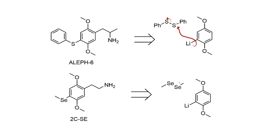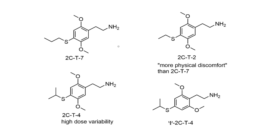Quite early in the series, Shulgin prepared 2C-T2 and 2C-T7 — fairly straightforward ethylthio and propylthio analogues — and these ended up being the compounds most extensively studied in human trials. Their effects broadly seem comparable, with the note that 2C-T2 has more adverse physical side effects. 2C-T4, with the isopropyl group, was made as the analogue of Aleph-4 but was found to have high dose variability. Pseudo-2C-T4 was made to explore the structure-activity relationship of the aryl ring by moving the methoxy group one position over.